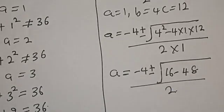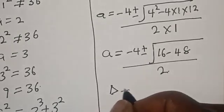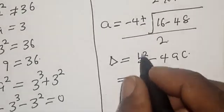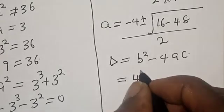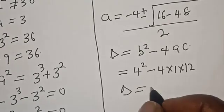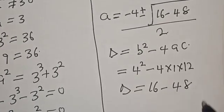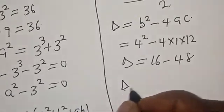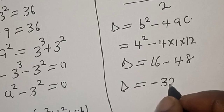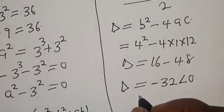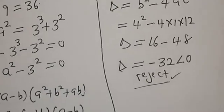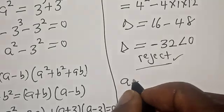In this case, we are going to have a complex solution. Our discriminant is B squared minus 4AC, which equals 4 squared minus 4 times 1 times 12, giving us 16 minus 48 equals negative 32, which is less than 0. Since the discriminant is negative, we reject this quadratic solution.